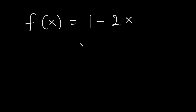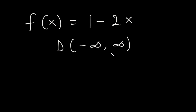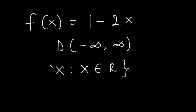The domain of any linear function is the set of all real numbers, from negative infinity to infinity. This means that whenever you insert any real number between negative infinity and infinity in place of x, you are going to get a corresponding value for y or f of x. The function exists for all real numbers, hence it is defined. So the domain can be written as: x is such that x is the set of all real numbers.